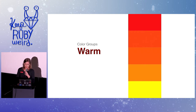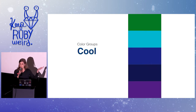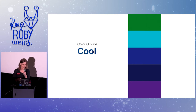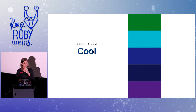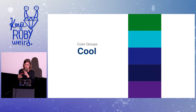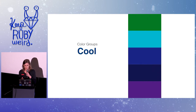Then we have cool color groups. The sort of polar opposite of the warm color groups, cool colors are generally calmer and relaxing. Colors in this group are often associated with stability and composure. If you think about brands that use these kinds of colors, you'll see a lot of institutions that really want you to trust them — like banks, hospitals, insurance companies, and Facebook.